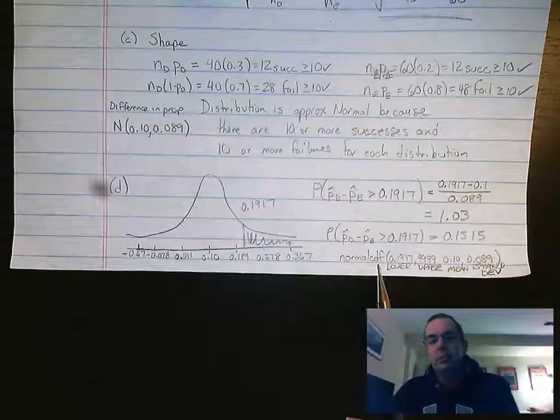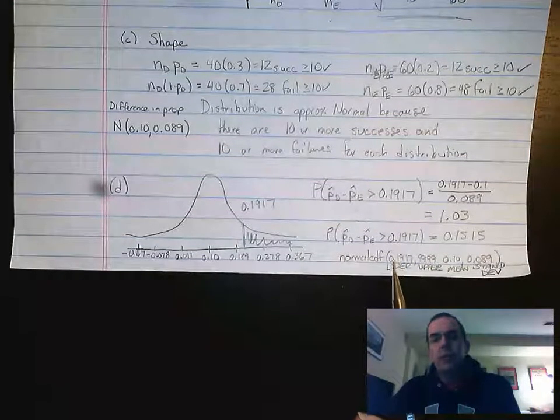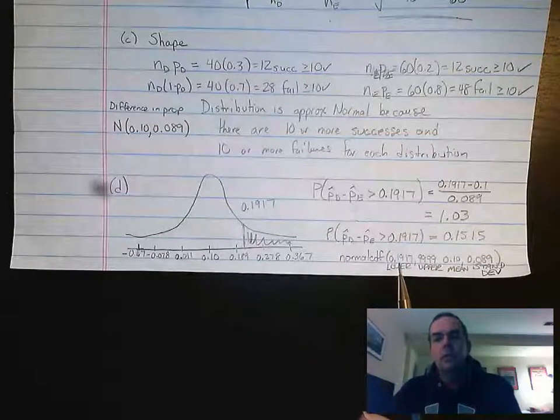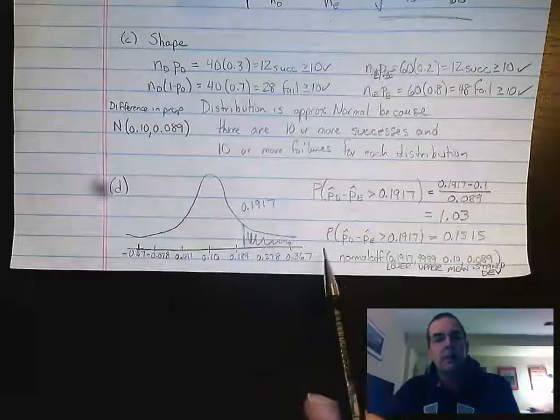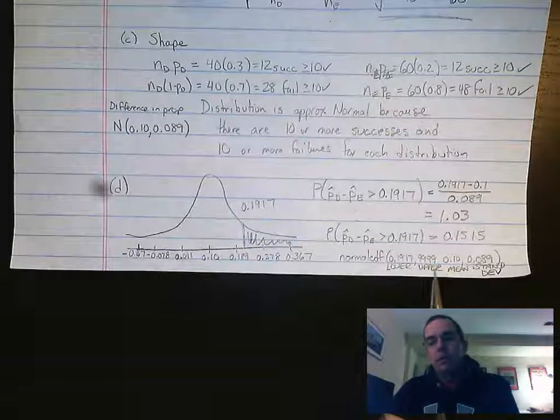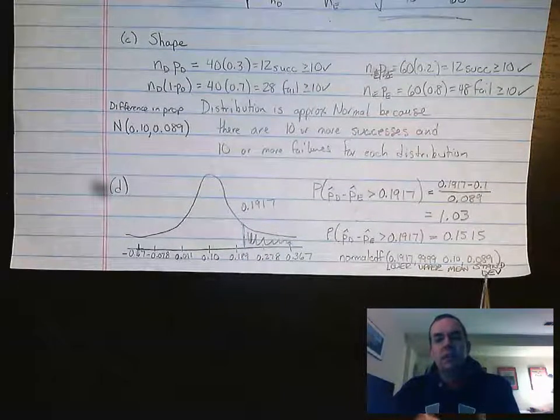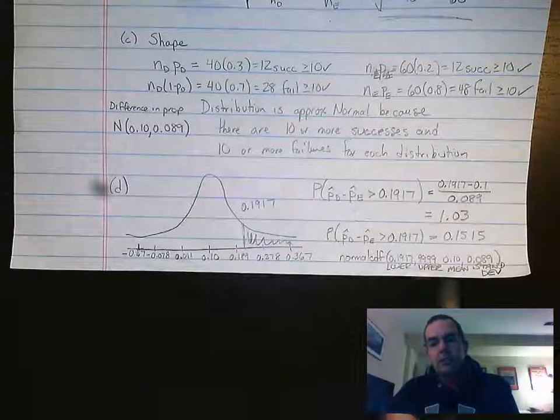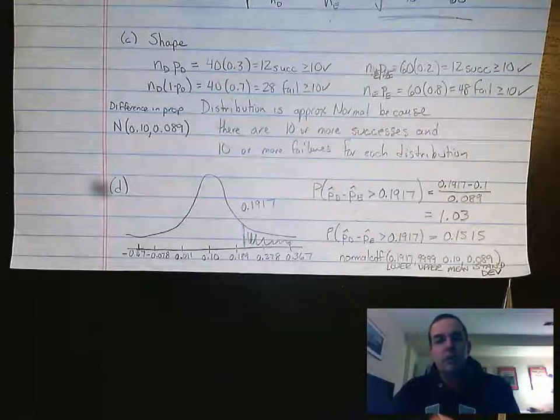Or you can use normal CDF in your calculator, where you have lower bounds, upper bounds, mean, and standard deviation. The lower bound is 0.1917. The upper bound is just lots of nines. Our mean is 0.10, and our standard deviation is 0.089. If you use this calculator method, please label each one of those numbers.